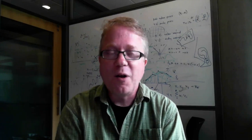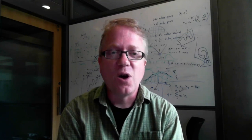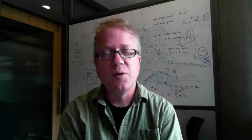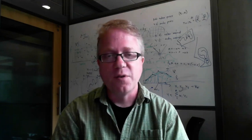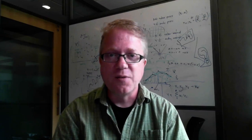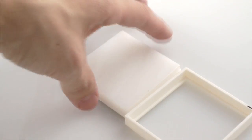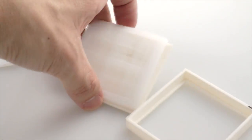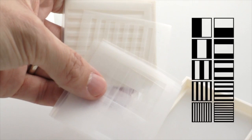You've probably also seen techniques in augmented reality, for example, where you actually put a printed code on the surface of an object. This is a little bit related to that — we're looking at different kinds of binary patterns on objects — except that we don't have to make the object look different. We can actually hide that pattern underneath the surface and make it part of the structure itself.